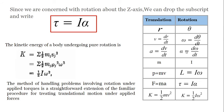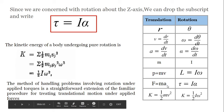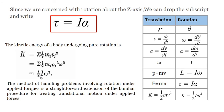The linear momentum is p equals mv, and the corresponding angular momentum is L equals I times omega, where I corresponds to mass m and omega corresponds to velocity v. The kinetic energy in rotation will be equal to one-half I omega squared.